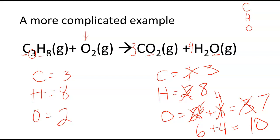Ten oxygens on the right. I need to have ten oxygens on the left. So I'm going to change the coefficient here to a five. So that's going to give me ten oxygens.